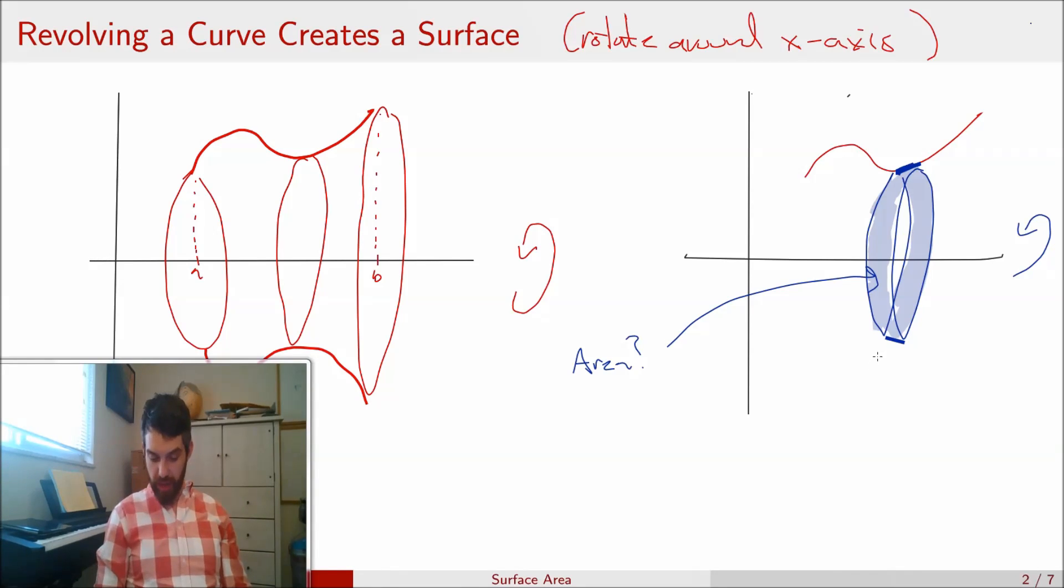Now to do this, I'm going to first note that the width of this little guy is going to be dx. I'm imagining that I am breaking this up into a sum of little delta x's, and then in the limit as n gets large, I'm going to replace my delta x's with dx's. That's the pattern we've seen with integration before. So I've got this little infinitesimal width dx.